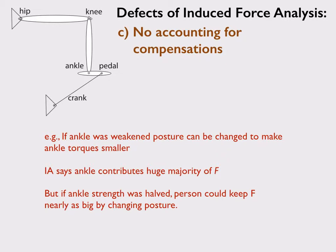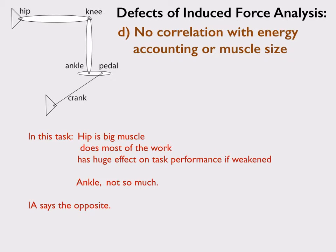No accounting for compensation: imagine that the ankle was weakened. You could then change your posture so that you could get big forces at the pedal with your big hip muscles by making the lever arm of the ankle less, and this could be something people could learn in time or compensate for very quickly. There's no correlation with energy accounting: the hip is a huge muscle that does most of the work in bicycle pedaling, and if you weakened it, it has a huge effect. The ankle has not so much of an effect—you can pedal pretty well with a fused ankle or a boot—yet induced acceleration says the ankle muscle is the most important.